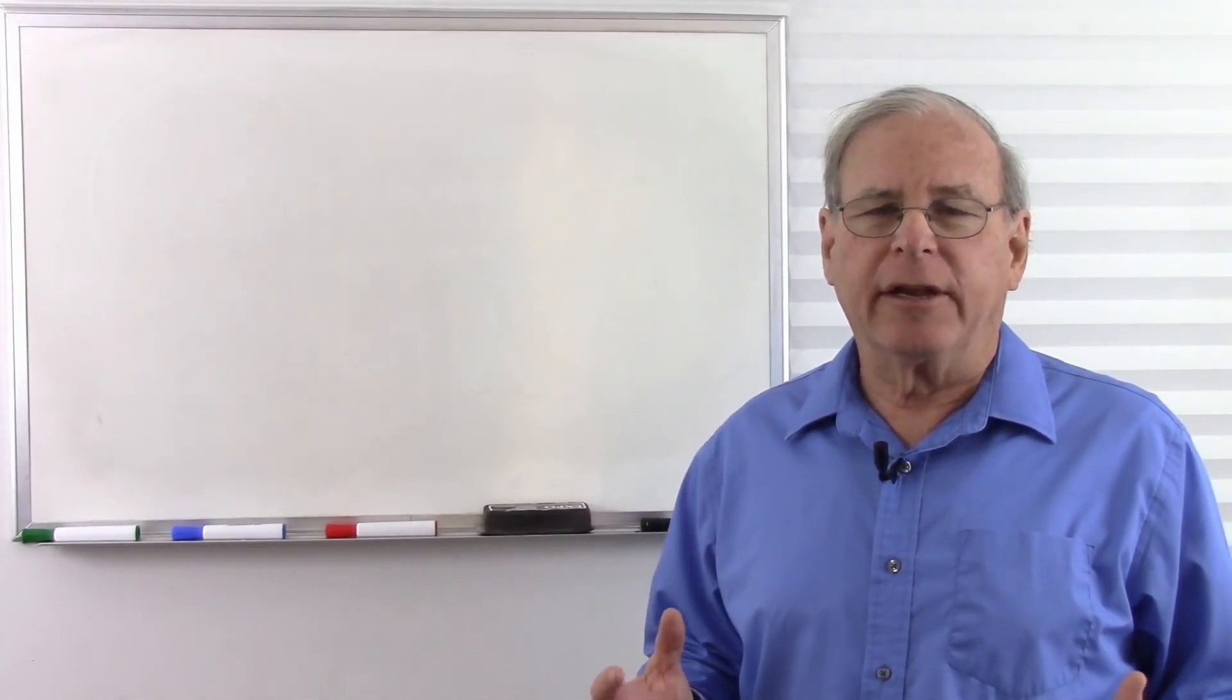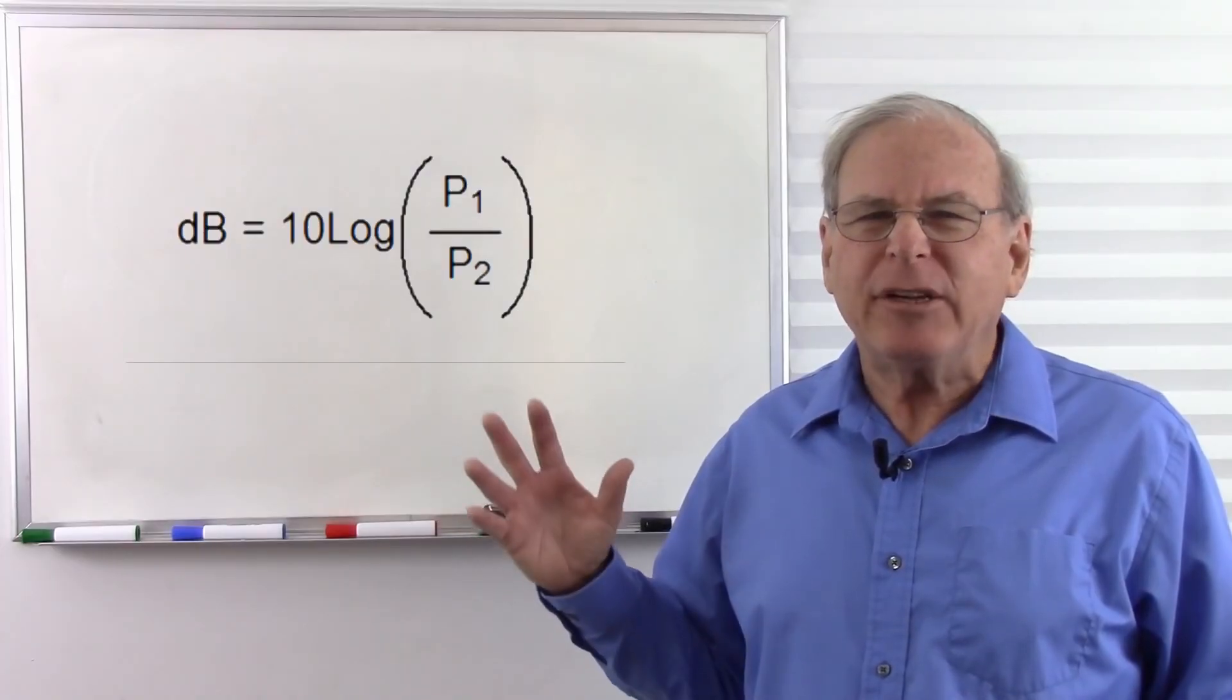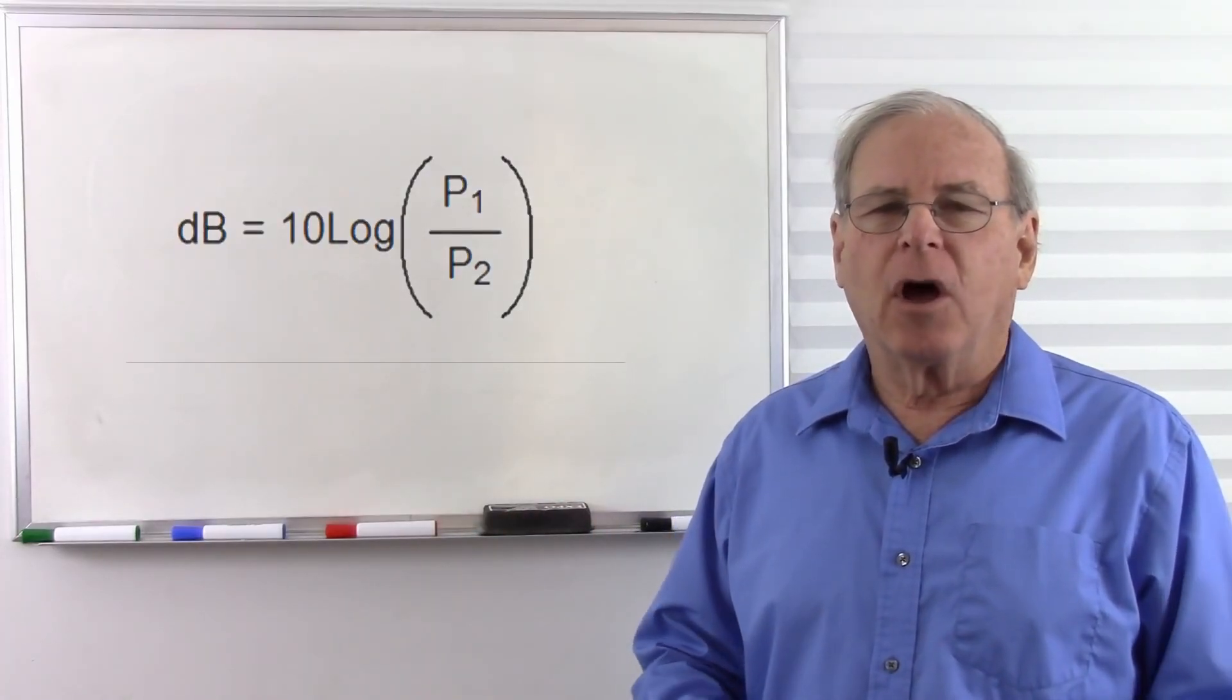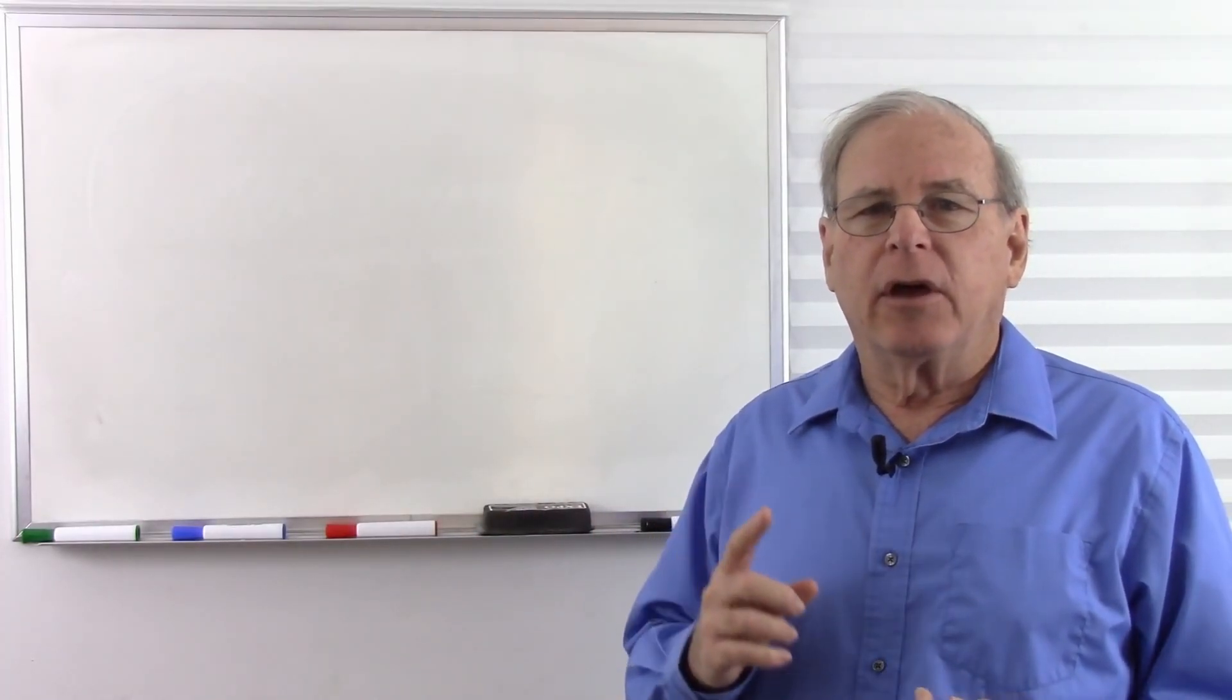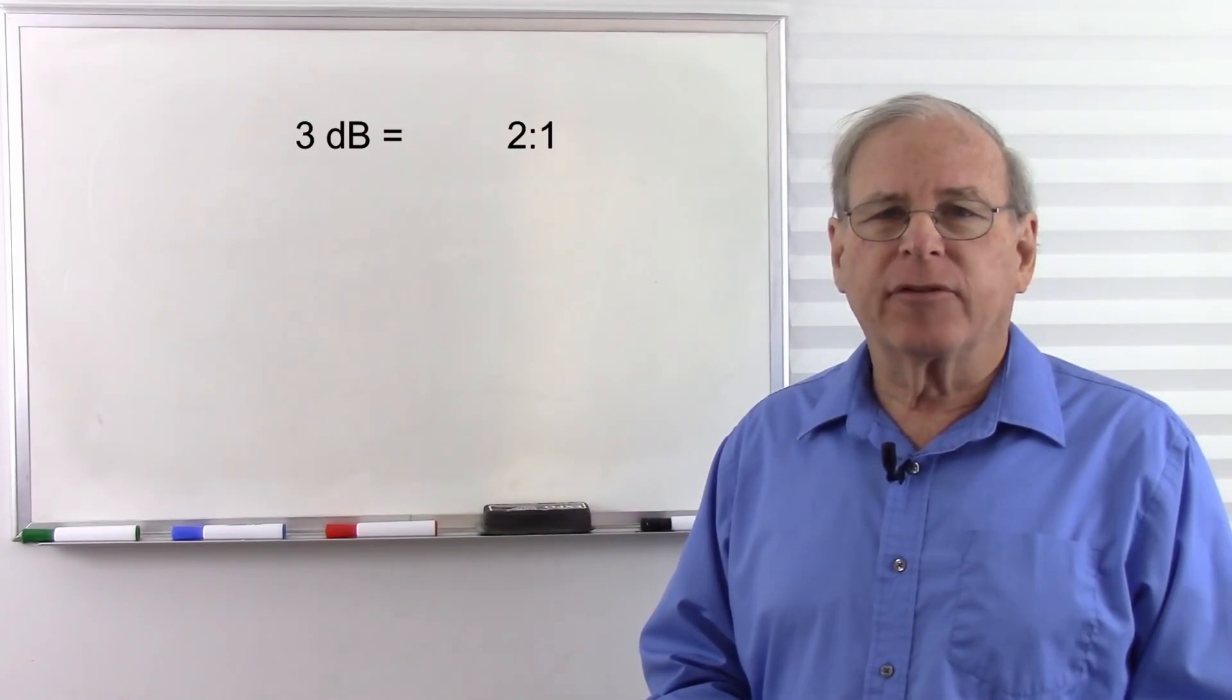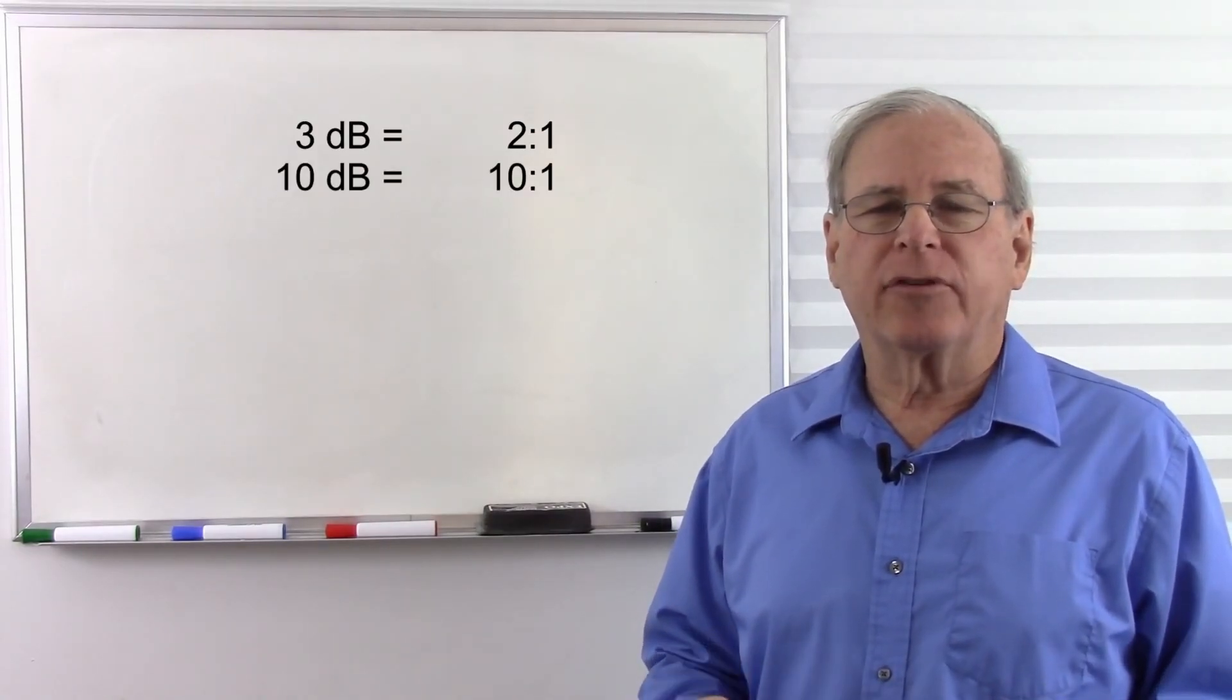Now there is a formula to calculate decibels. Here it is. But you don't really need to use that very often. All you have to remember is a ratio of 2 to 1 is 3 decibels, and a ratio of 10 to 1 is 10 decibels.